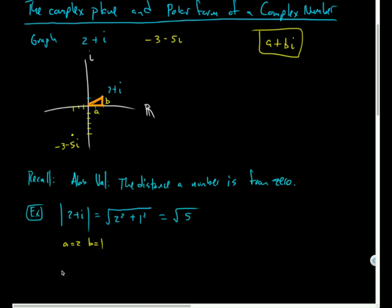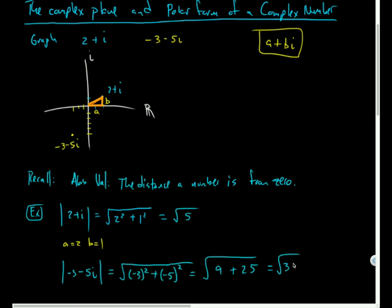And the absolute value of negative 3 minus 5i would just equal the square root of negative 3 all squared plus negative 5 all squared. So that would be the square root of, negative 3 squared is positive 9, negative 5 squared is positive 25, so that's the square root of 34, and that does not reduce. So that would be the absolute value of this complex number.